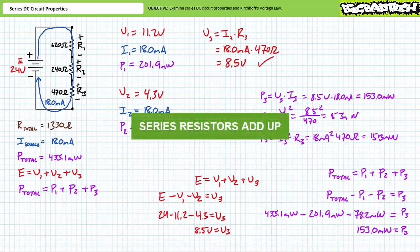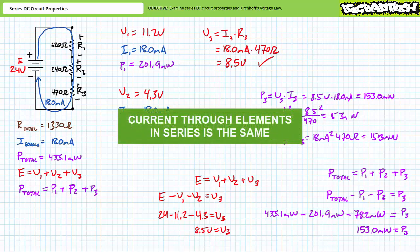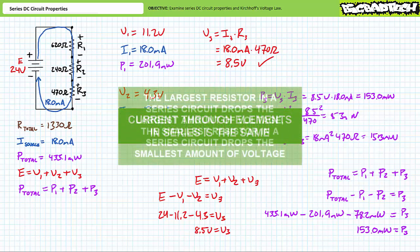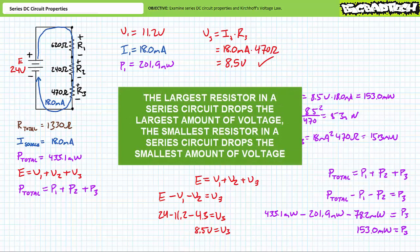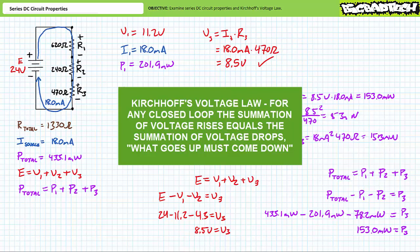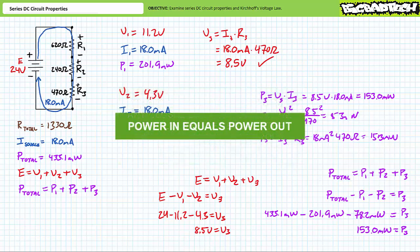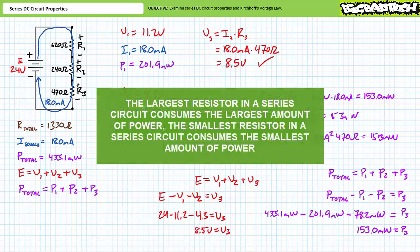For series circuits, these properties are as follows: one, series resistors add up; two, current through elements in series is the same; three, the largest resistor in a series circuit drops the largest amount of voltage, and the smallest drops the smallest amount of voltage; four, Kirchhoff's voltage law, which states for any closed loop the summation of voltage rises equals the summation of voltage drops — what goes up must come down; five, power in equals power out; and six, the largest resistor dissipates the largest amount of power, and the smallest resistor dissipates the smallest amount of power.